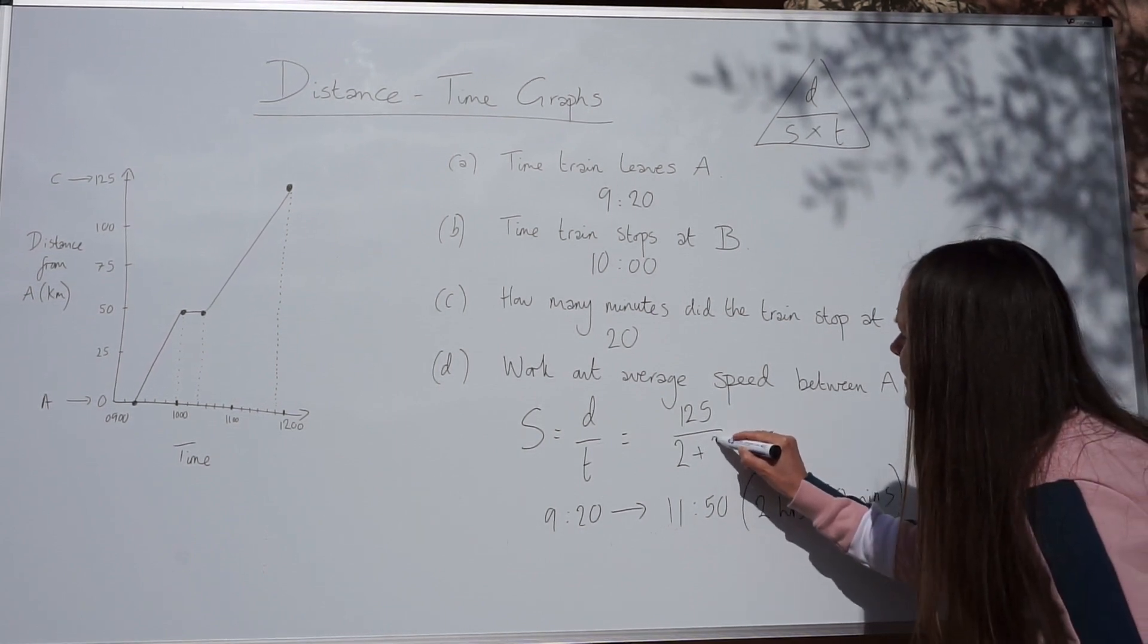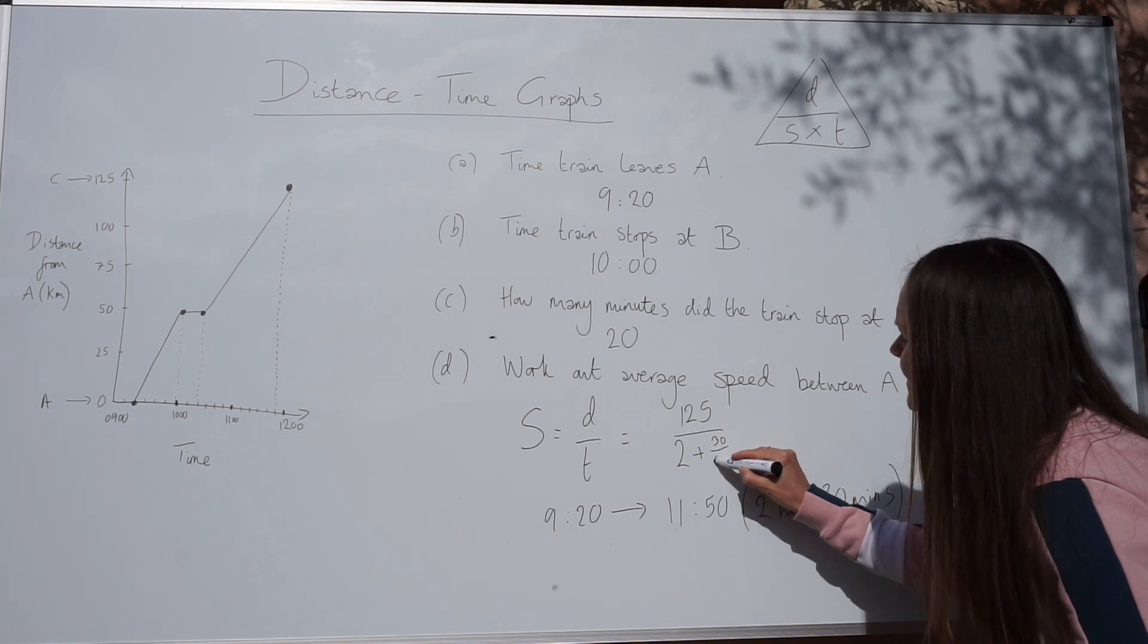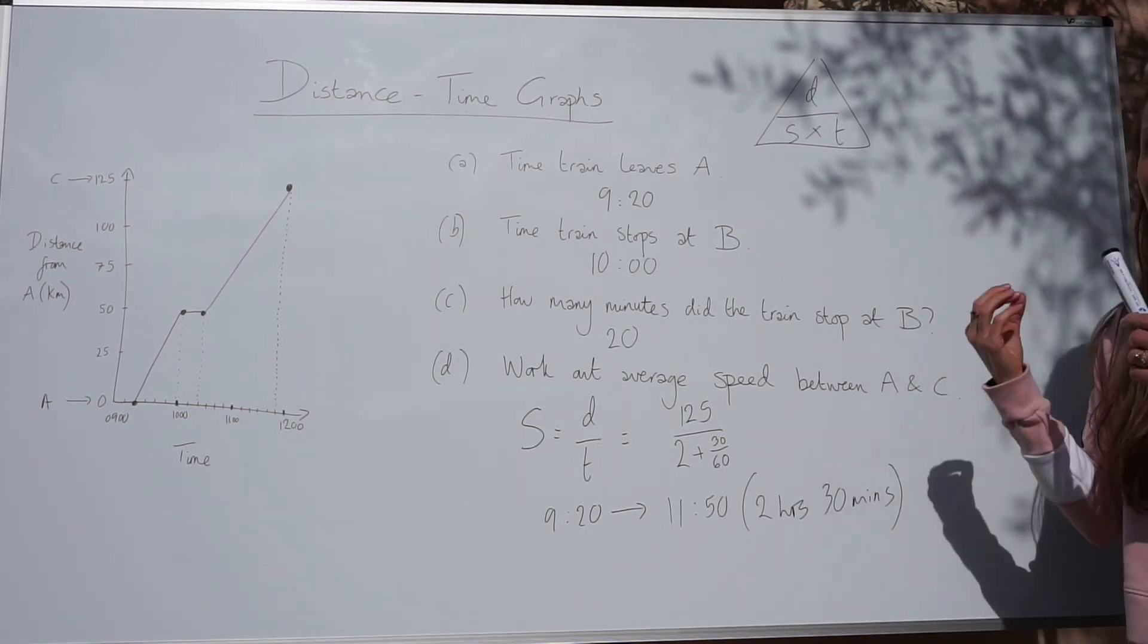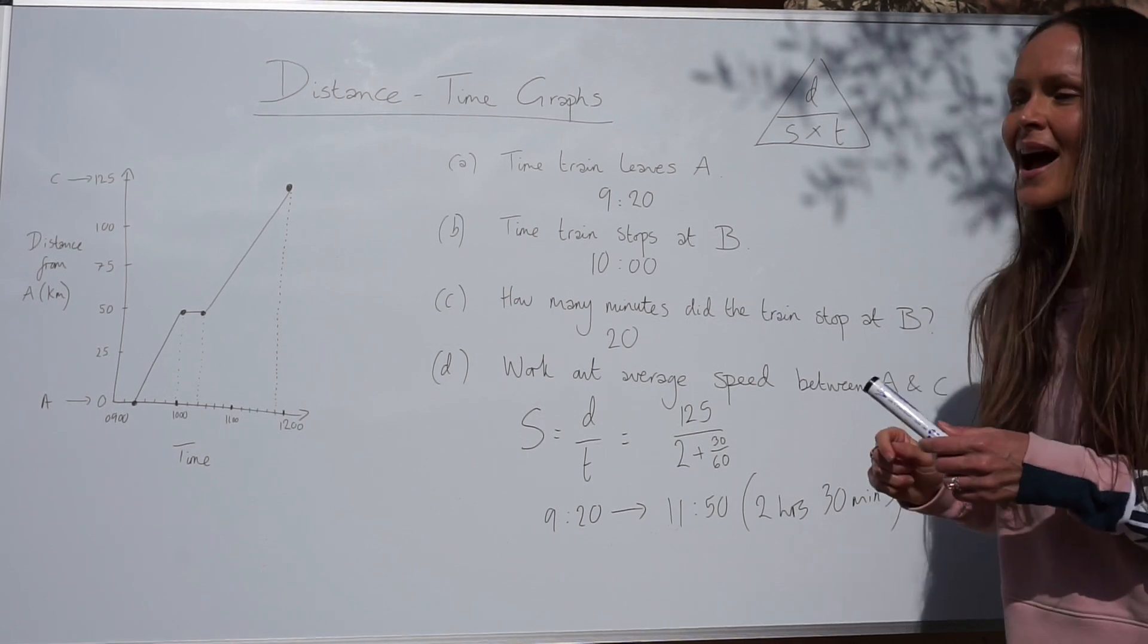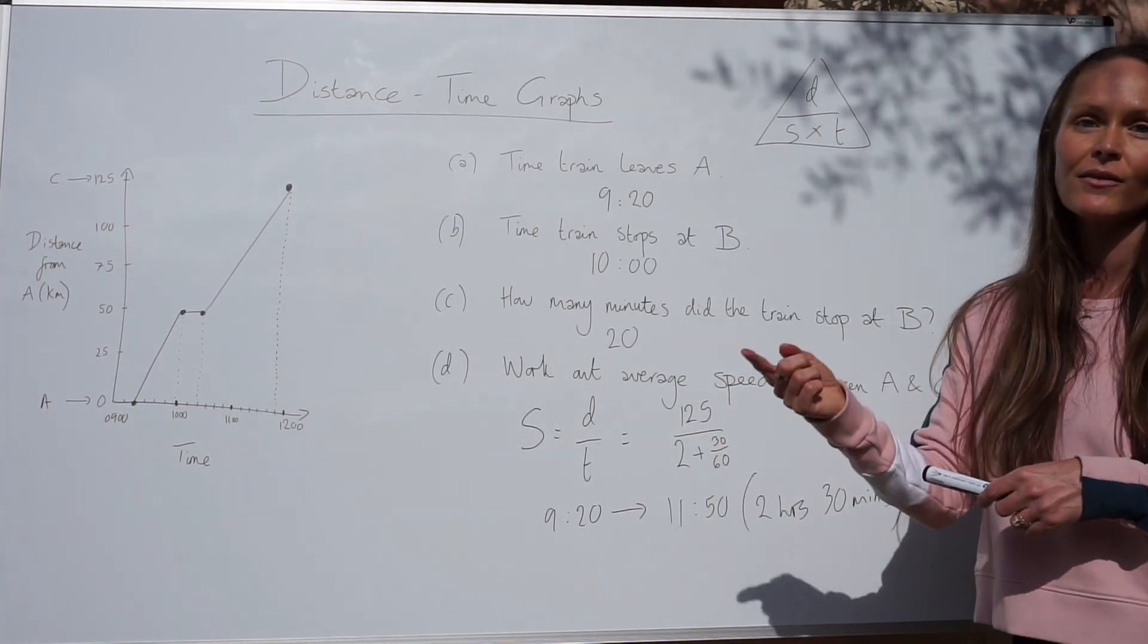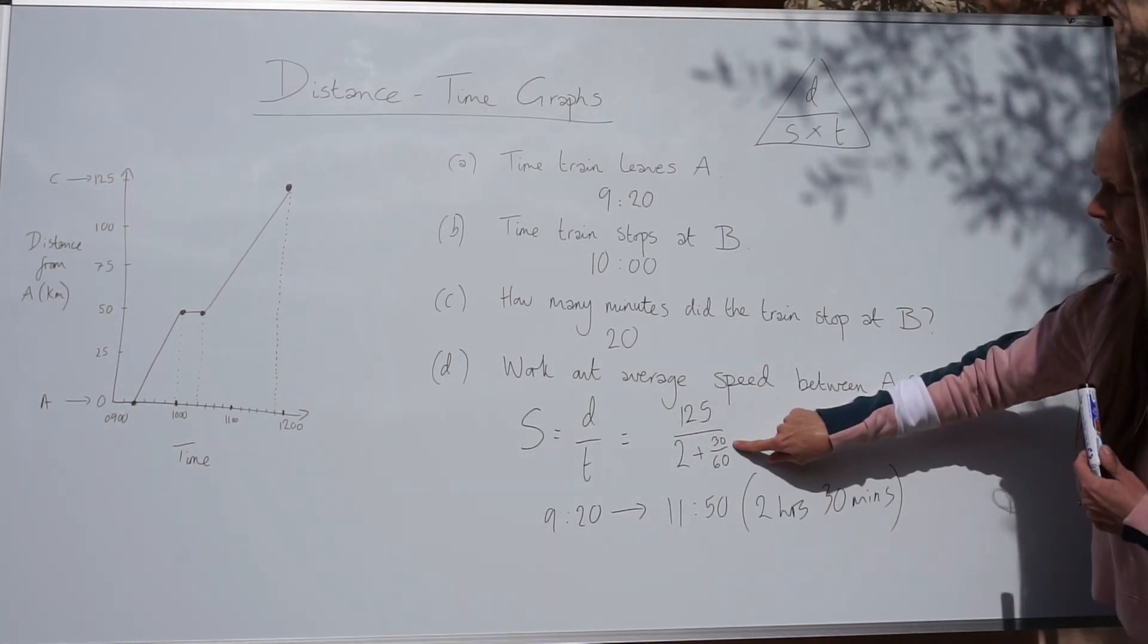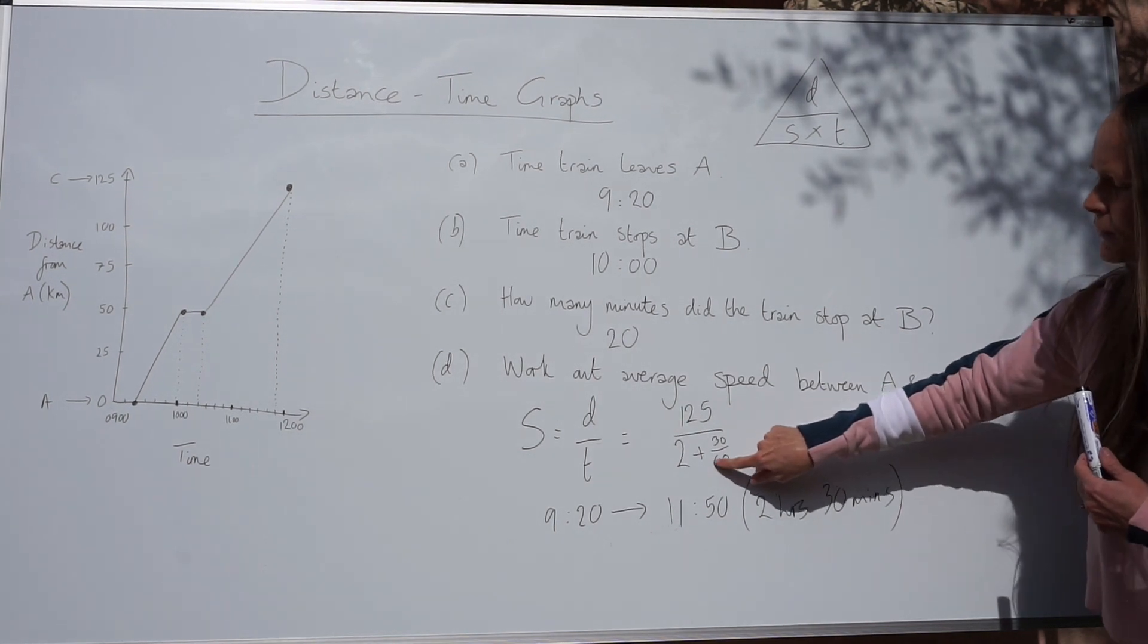You need to add 30, but write it out of 60, because there are 60 minutes in one hour. And to change minutes into hours, you have to divide by 60. And when I write it as a fraction like this, I'm dividing by 60.